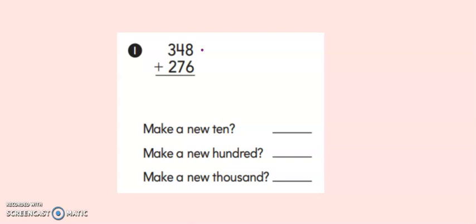So let's start in the ones place as always. I have eight plus six. So eight, nine, ten, eleven, twelve, thirteen, fourteen. Fourteen ones. Did I make a new ten? Yes I did. So let's write yes on the line. I made a new ten and I put it up here at the top. If I had to put a number at the top, I'm going to write yes.